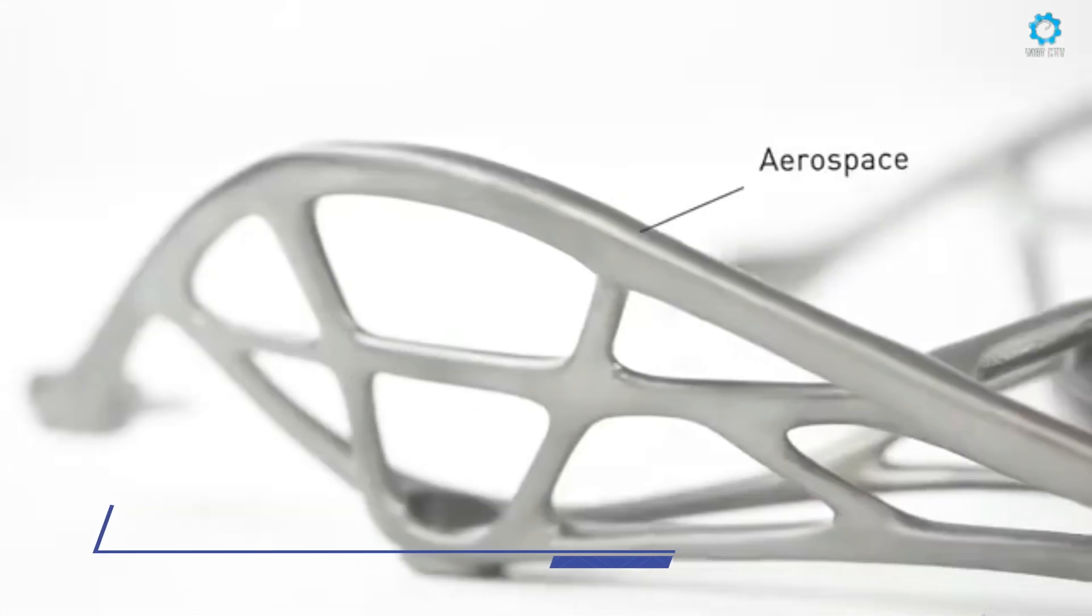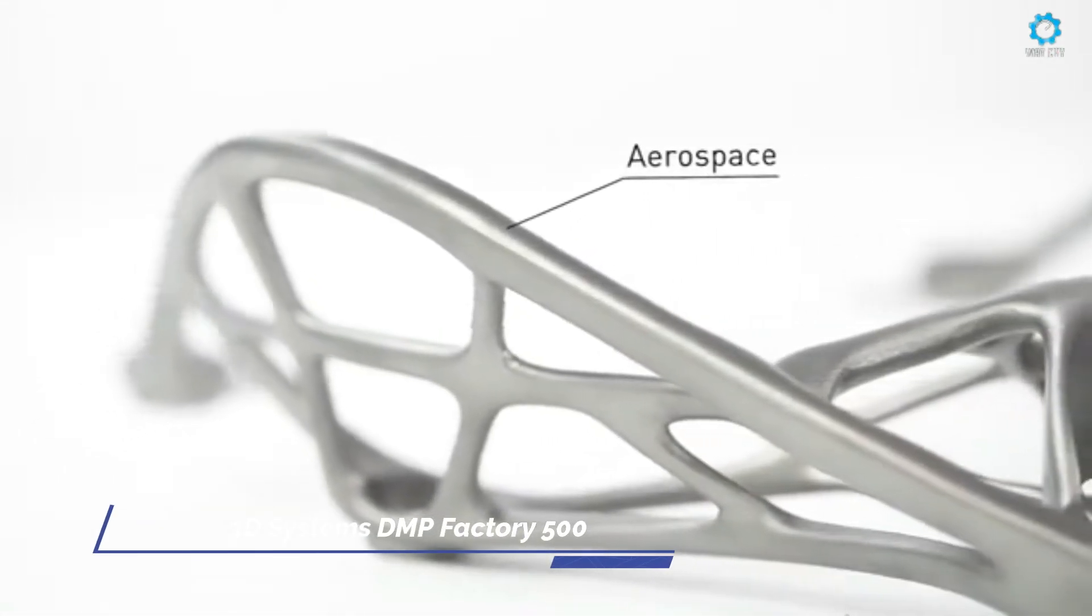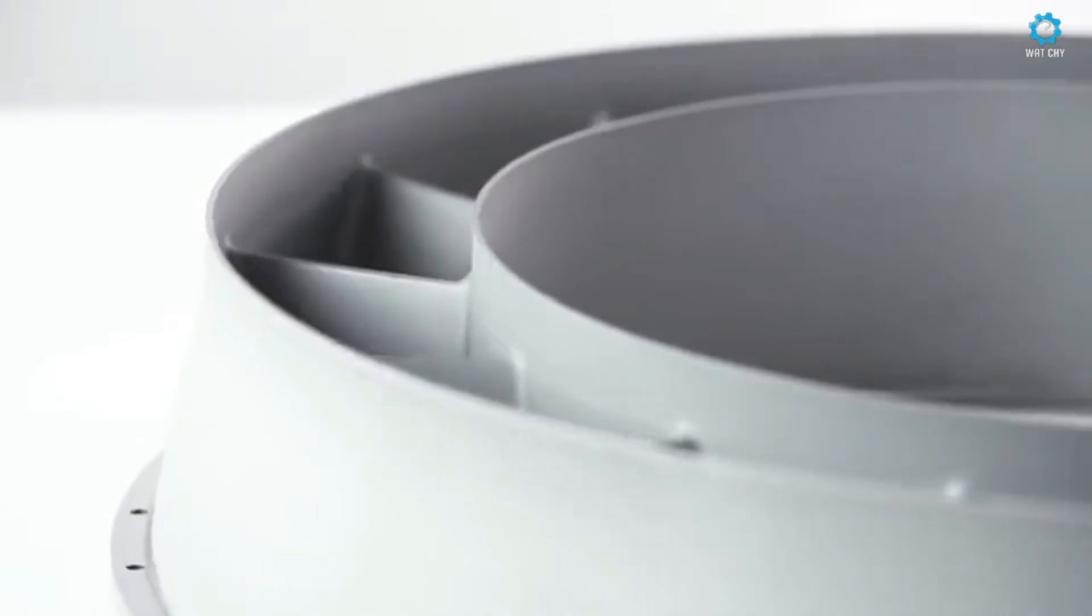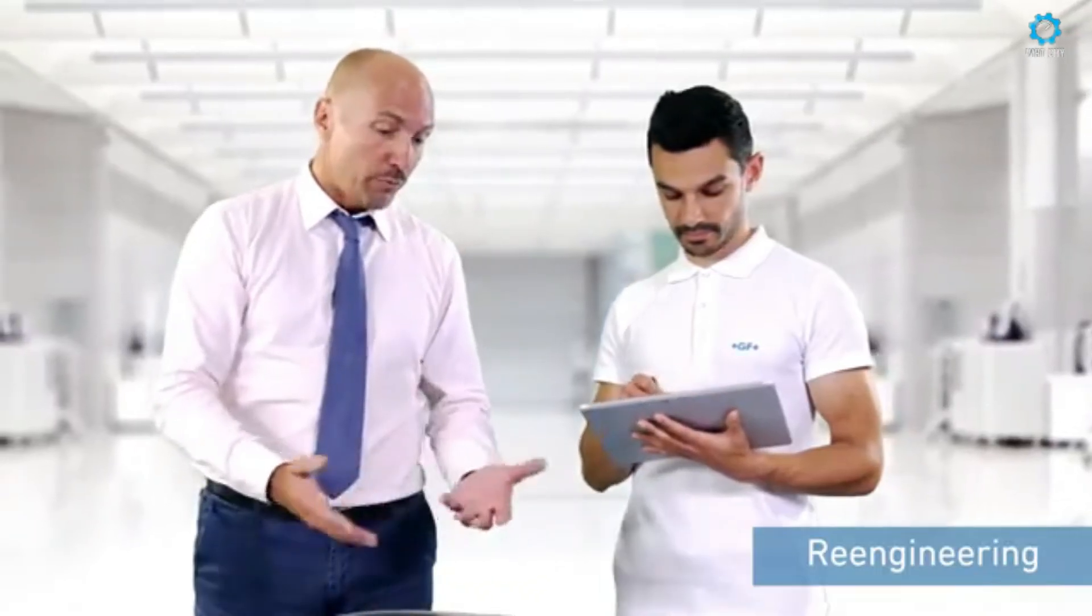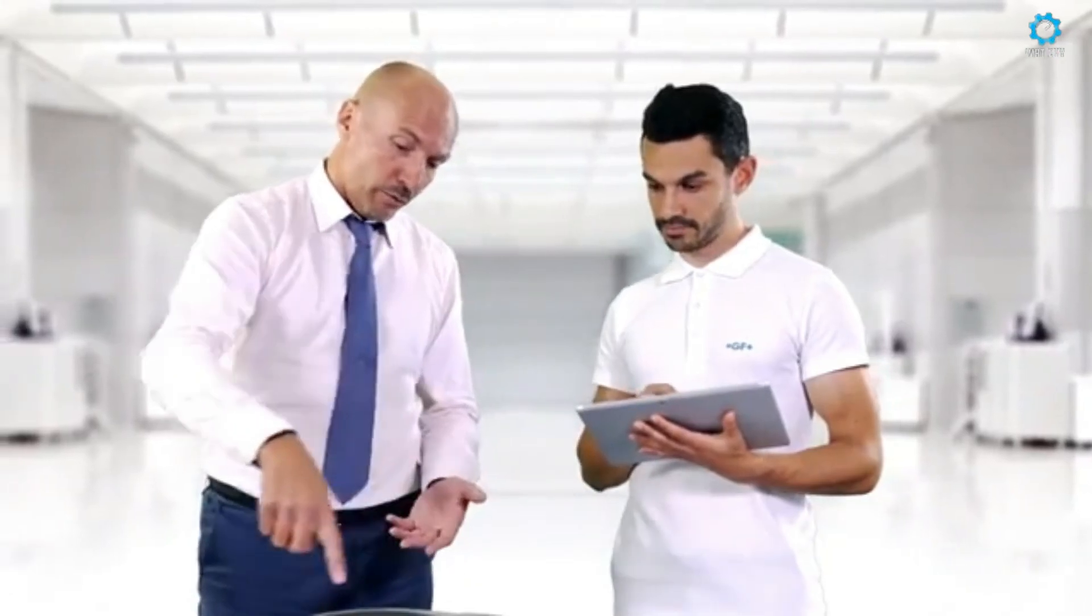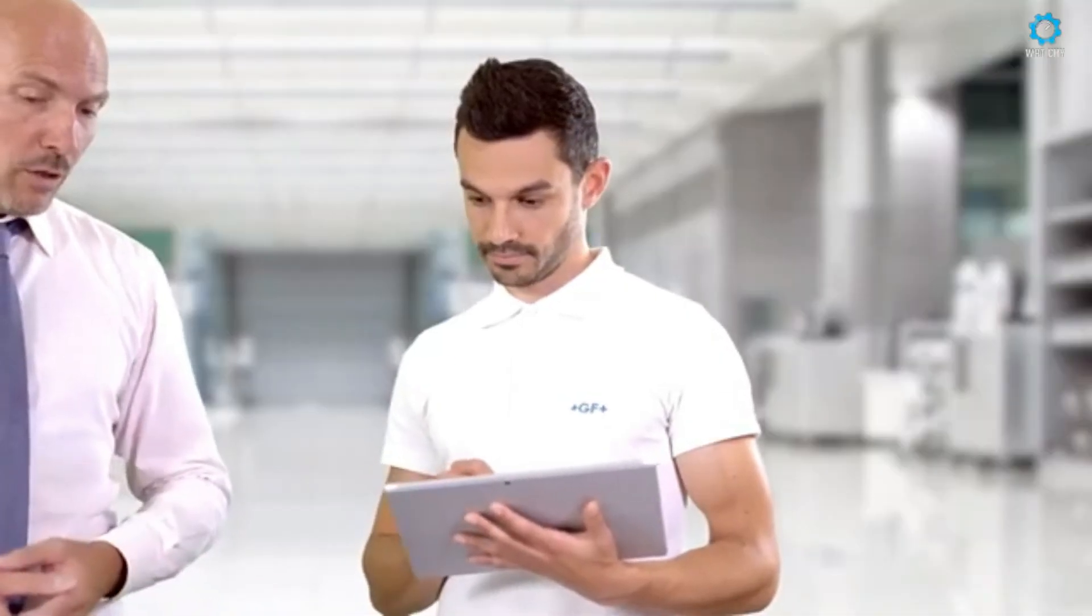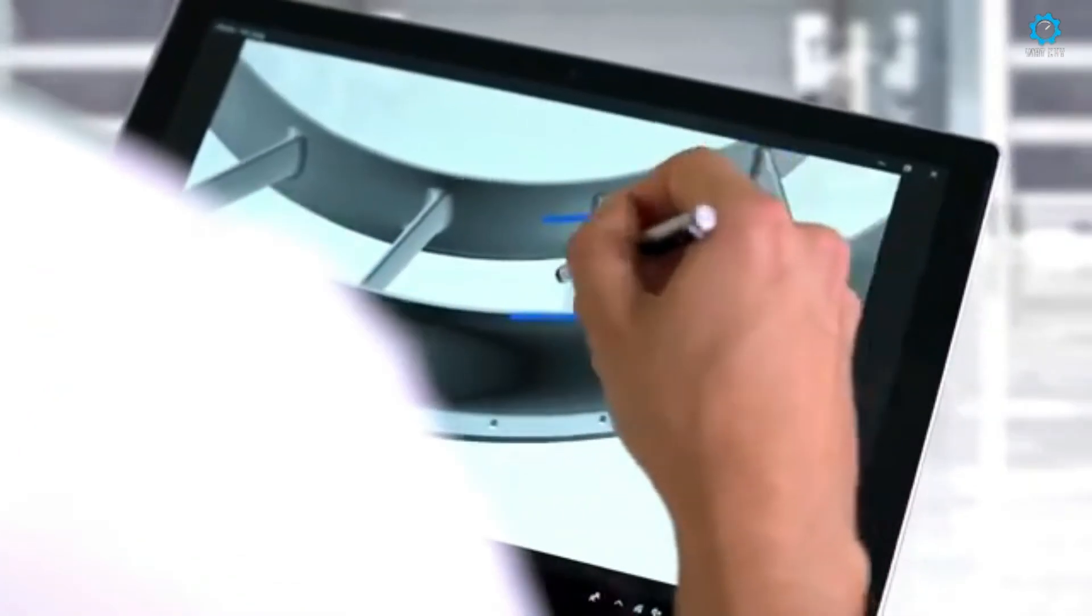The 3D Systems DMP Factory 500 is designed to meet the rigorous demands of industries such as aerospace, medical, and dental. With its dual 500-watt lasers, the DMP Factory 500 delivers superior precision and repeatability, essential for producing high-performance parts with complex geometries.